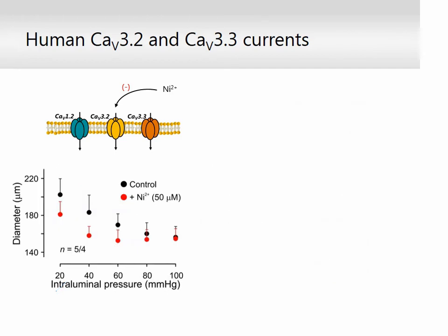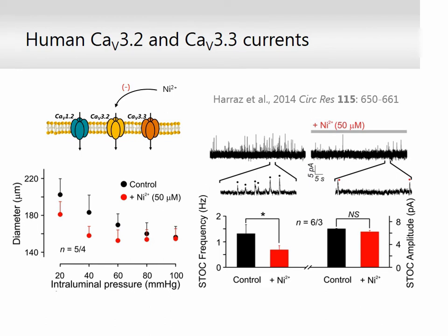Moving to whole human arteries, NiCl2 augmented myogenic constriction, especially at lower to medium intraluminal pressure values. This finding was similar to recent findings in rat cerebral arteries, where we identified a functional correlation between CAV3.2 and the large conductance calcium-activated potassium BK channels. We assessed this in human arterial smooth muscle cells using perforated patch clamp electrophysiology to monitor BK-mediated spontaneous transient outward currents. As expected, CAV3.2 inhibition using NiCl2 suppressed BK current frequency, suggesting that CAV3.2 plays a key role in feedback control of arterial tone through downstream modulation of BK channel activity.